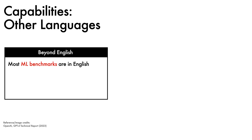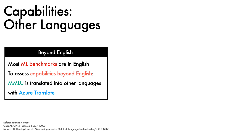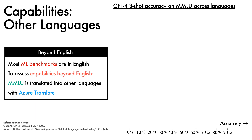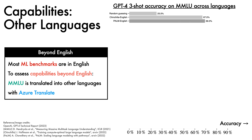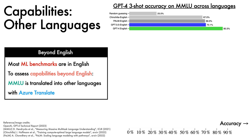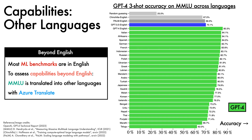Noting that most machine learning benchmarks are in English, the authors next assess the capabilities of GPT-4 beyond English by translating the MMLU benchmark into other languages using Azure Translate, then re-evaluating the model. Examining the results, a random guessing baseline scores 25%. Other points of reference include evaluations on the English variant of the benchmark with Chinchilla scoring 67%, PaLM scoring 69.3%, and GPT-3.5 scoring 70.1%. In this setup, GPT-4 scores 85.5%. Across a range of other languages, GPT-4 works well, outperforming GPT-3.5 on English MMLU for all but two languages considered.